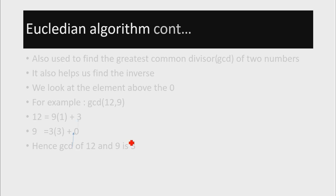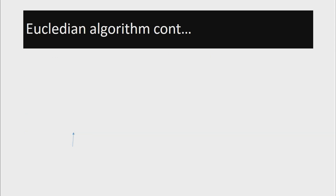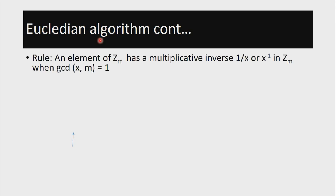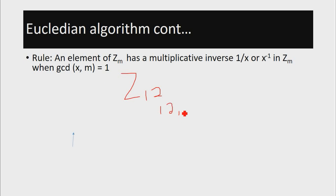Moving on with the Euclidean algorithm, let's look at the following rule. An element of ZM has an inverse — written as 1 over X or X to the power of negative 1 — in ZM, when the GCD of X and M is equal to 1. This means that in Z12, for example, only those elements for which GCD(12, X) equals 1 will have an inverse.